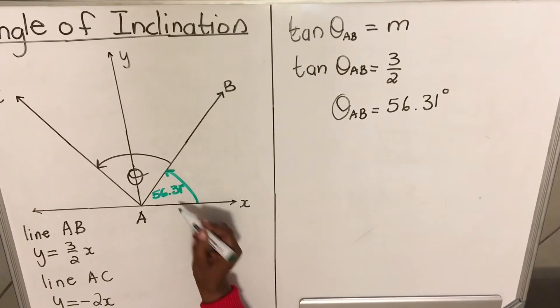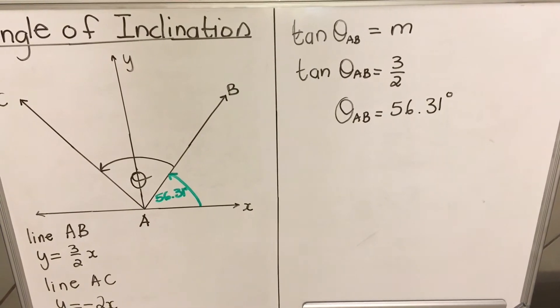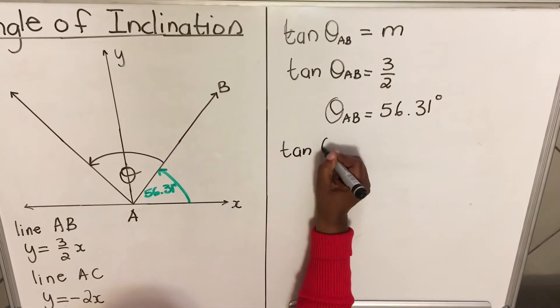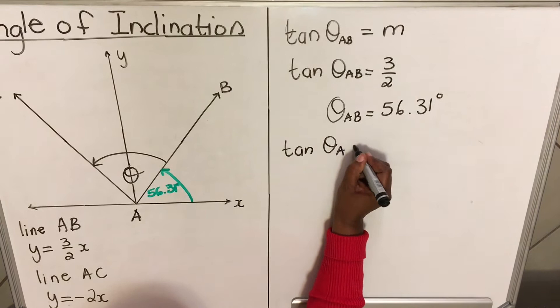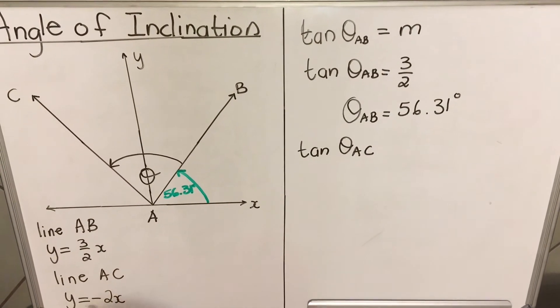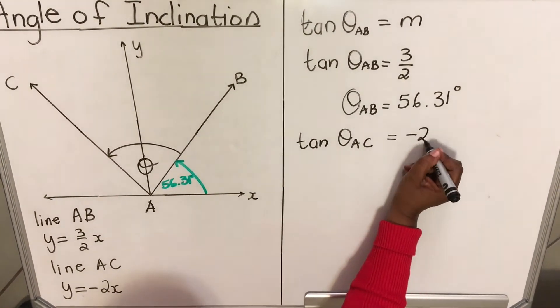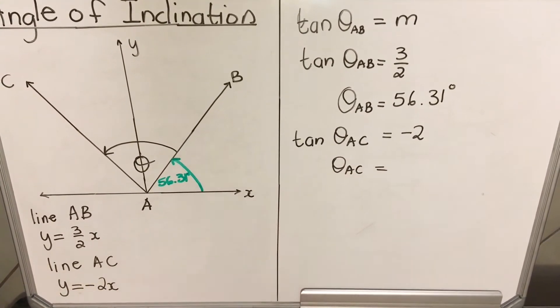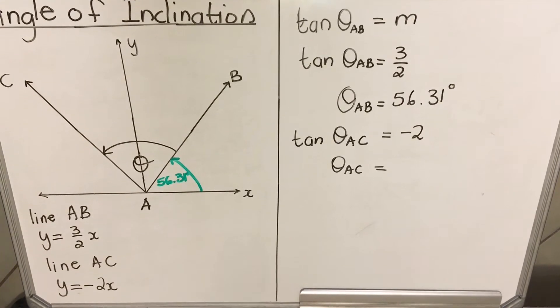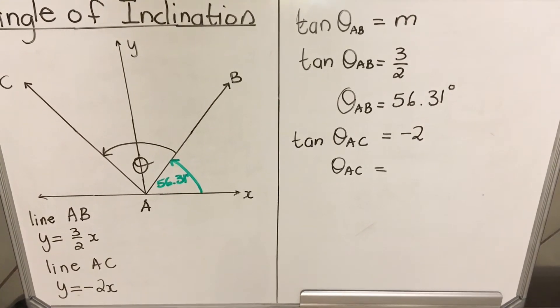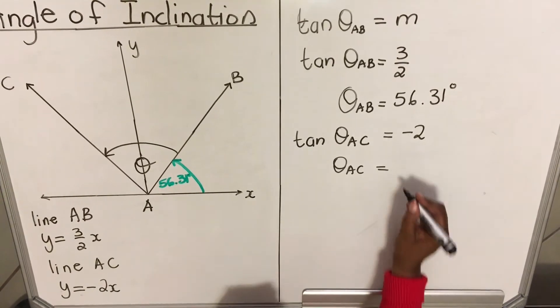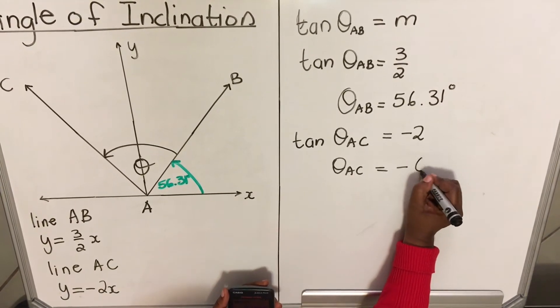Now let's look at theta for AC. Tan(theta) for AC — what is the gradient for AC? It is minus 2. So theta for AC equals shift-tan of negative 2, which gives us negative 63.43 degrees.